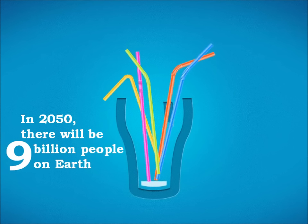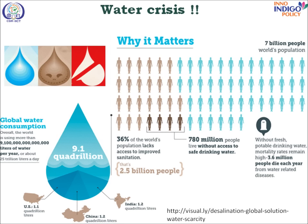It is approximated that in 2050 there will be 9 billion people on earth. About 70–80 million people live without access to safe drinking water and 3.6 million people die each year from water-related diseases.